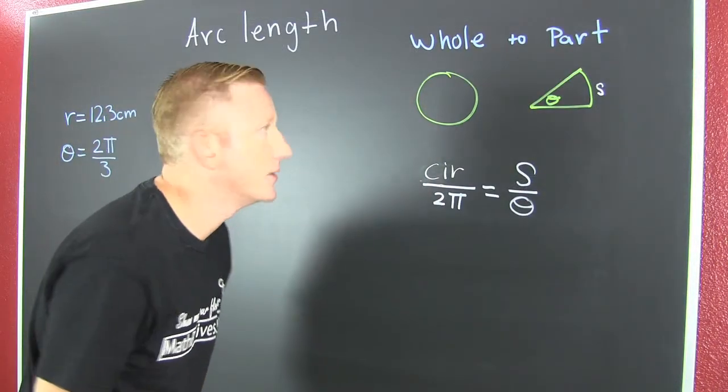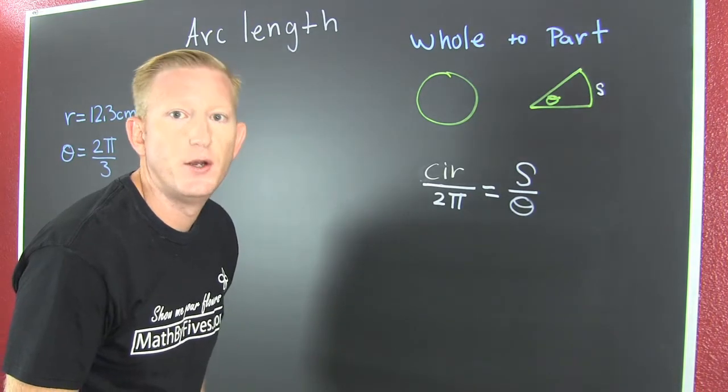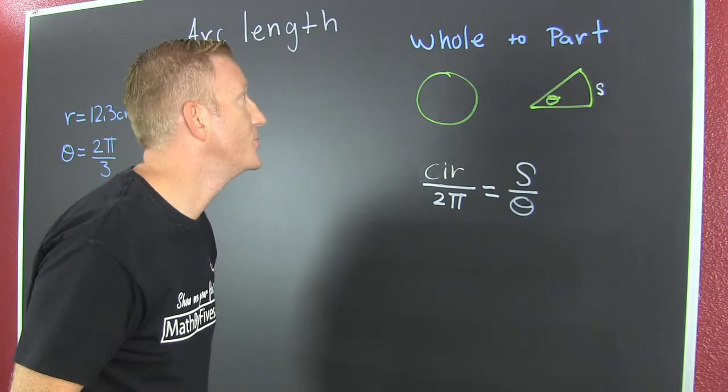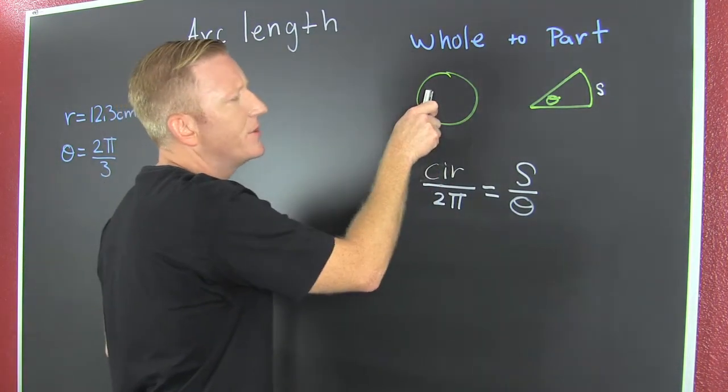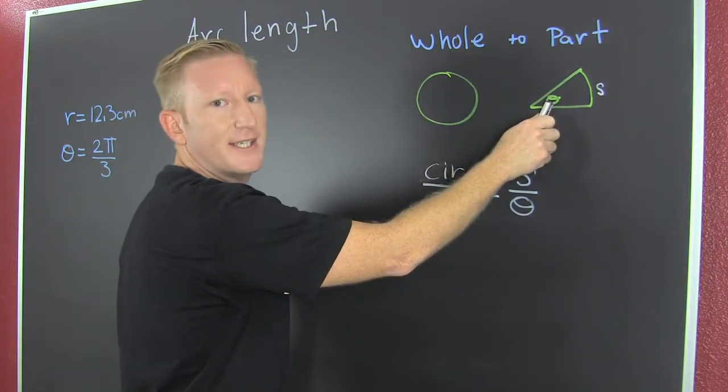On over here. What are we talking about? We need to set up a proportion. What's a proportion? It means two ratios are equal. Which ratios? Oh, these guys. I want to do the whole to the part. The whole circle to a part of a circle, a sector.